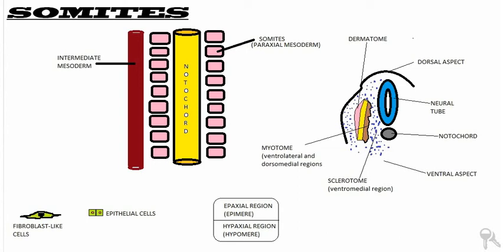Hello, and today we are going to talk about somites. Somites are regions or segments of paraxial mesoderm that will develop in the end of the third week of development. The paraxial mesoderm, as can be assessed by its name, is mesodermal tissue which is adjacent to the notochord — adjacent to the axis of the body. This paraxial mesoderm will form segments, and these segments are tissue blocks known as somites.